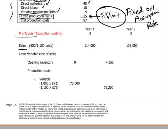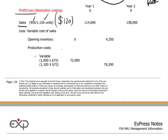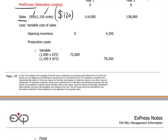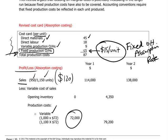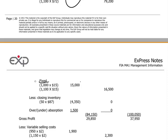The sales line is the same as in marginal costing — it's the number of units sold times the selling price of $120. For the cost of sales, we need the fully absorbed cost of sales, taking into account not only variable costs but also fixed production overhead costs at $15 per unit. In year one, 1,000 units are produced at $72 per unit from the cost card, plus the fixed costs of $15 per unit — an additional cost of $15,000.